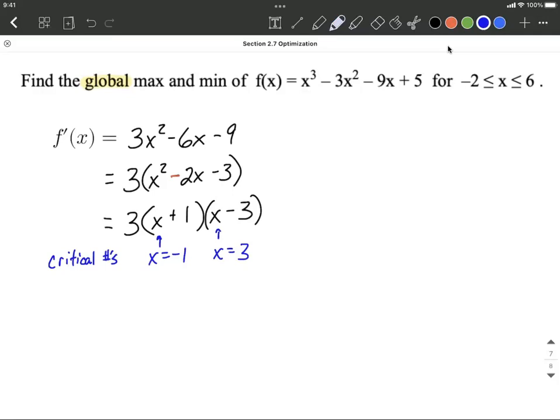From here, it actually is pretty easy the rest of our steps. All you have to do to finish this problem is you want to evaluate back into the original function negative 1. So negative 1 cubed minus 3 times negative 1 squared minus 9 times negative 1 plus 5. And I think after you work this all the way down you get 10. So f of negative 1 equals 10.